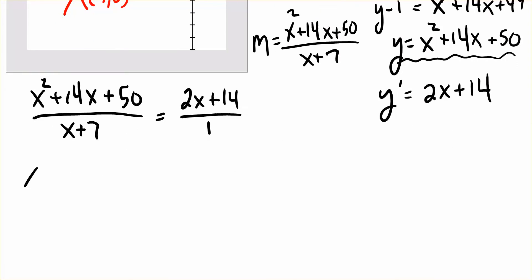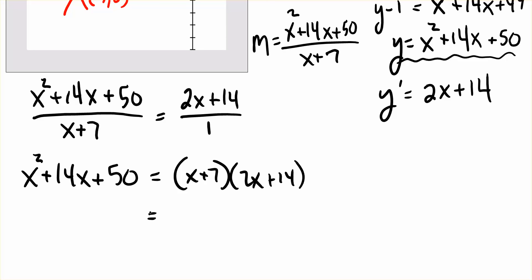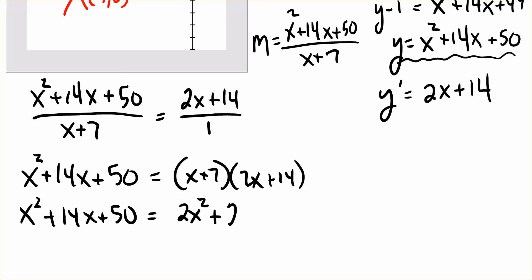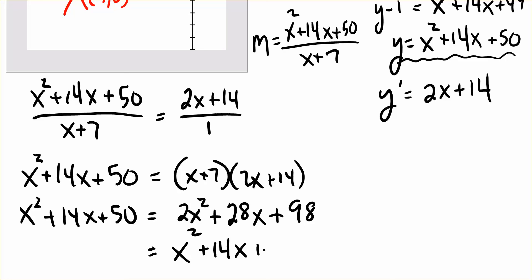Now we have an equation: x squared plus 14x plus 50 over x plus 7 is equal to 2x plus 14 over 1. Cross-multiplying, we get x squared plus 14x plus 50 is equal to x plus 7 times 2x plus 14. Multiplying out the right side gives 2x squared plus 28x plus 98. Moving everything to the same side, we end up with x squared plus 14x plus 48.